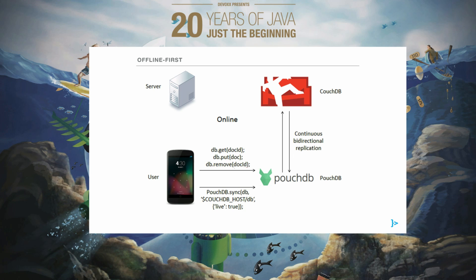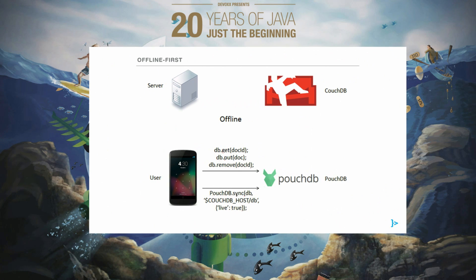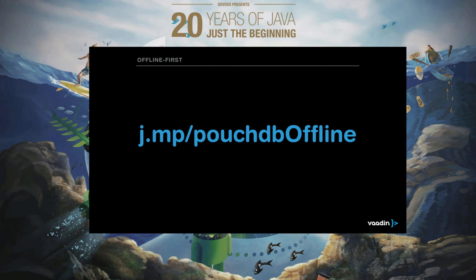PouchDB is an open-source solution that provides this service if and only if you have a server implementing the CouchDB protocol by Apache. All you need is a database on the server, and PouchDB will continuously replicate your data back and forth between your client and server whenever you are online. Once you go offline, PouchDB will manage reads and writes inside your local browser. When you get your internet back, everything will be replicated back to the server. If you want to learn more about working offline with PouchDB, please check the link — it has a nice blog post with examples.